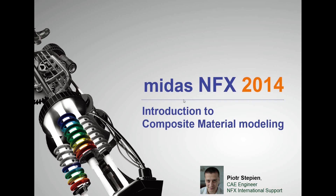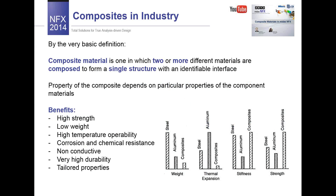Let's start from the most general definition of the composite. A composite material consists of two or more different materials which are composed to form a single structure. This consolidation proceeds on the macroscopic level, which means for example steel alloys, which are a composition of many components at the microscopic scale, are not composites because they behave as typical homogeneous materials on the macro level.